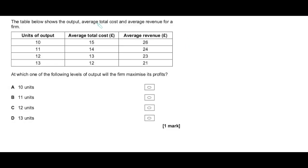Let's stick with this theme of maximization. Again, we don't need the random stuff at the top — we go straight to the question: which level of output will the firm maximize its profits? Profit maximization occurs when marginal cost equals marginal revenue. The problem here is we don't have MC and MR information or TC and TR to derive them. So we have to work out the level of profits directly. It's easy to do with average total cost and average revenue information, as long as you remember that 'average' in economics always means per unit.